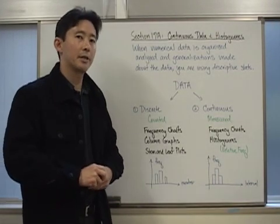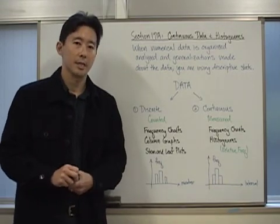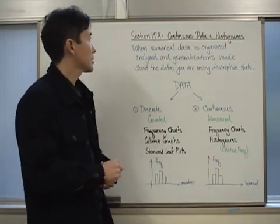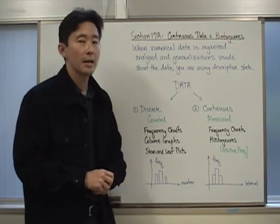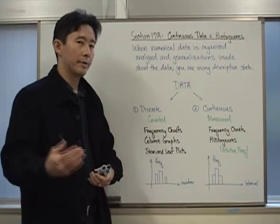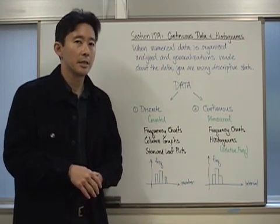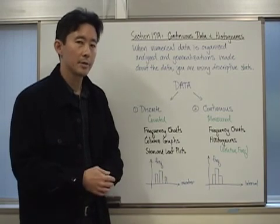Hello everyone, we're studying a new chapter, Chapter 17, which is called descriptive statistics. We'll take a look at this first section, section 17a: continuous data and histograms. We have already started some of the basic fundamental ideas with statistics in the IGCSE course, and we're going to develop those a little bit further in this chapter.